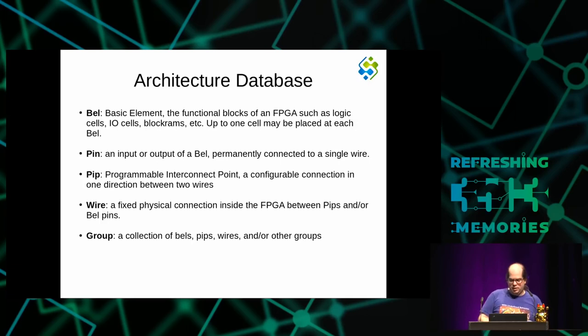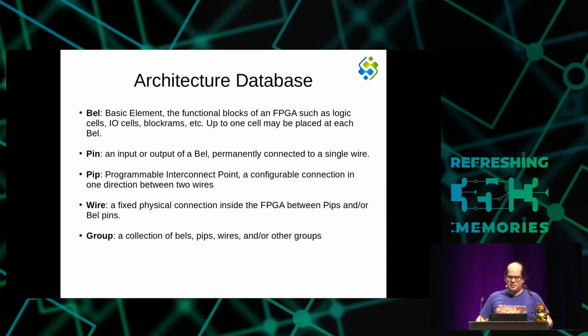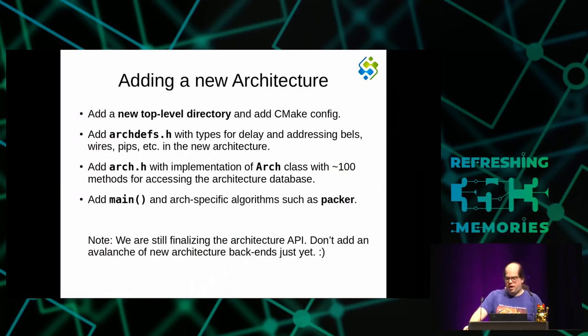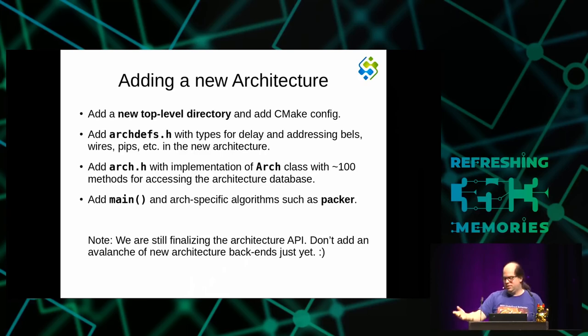There is another thing in our architecture database called groups, used only by the GUI. They are a means to group things into larger units. When you look at an FPGA, depending on the vendor, you might have organizational units like slices, where a couple of slices make up a tile, tiles make up a column, and so on. You can use groups to preserve this kind of structure in the GUI.